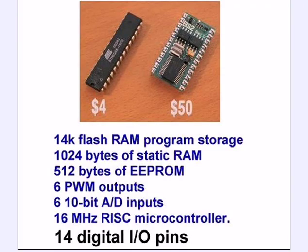Basic rundown again of the Arduino has 14k of program storage, 1k of static RAM for user variables, 512 bytes of EEPROM, and our main look here is going to be the 14 digital I.O. pins. This is a 16 MHz RISC processor. That's reduced instruction set computer.